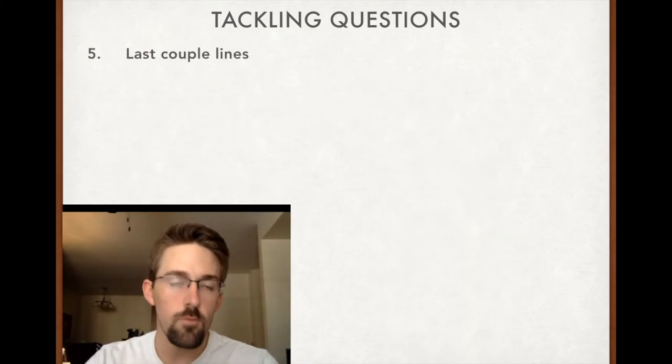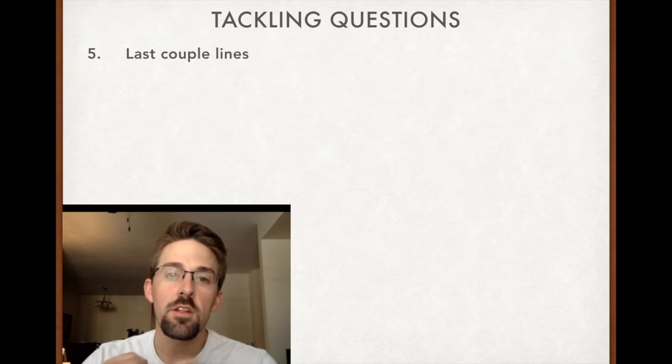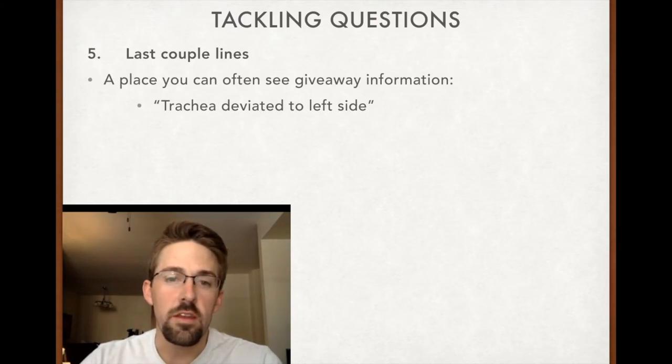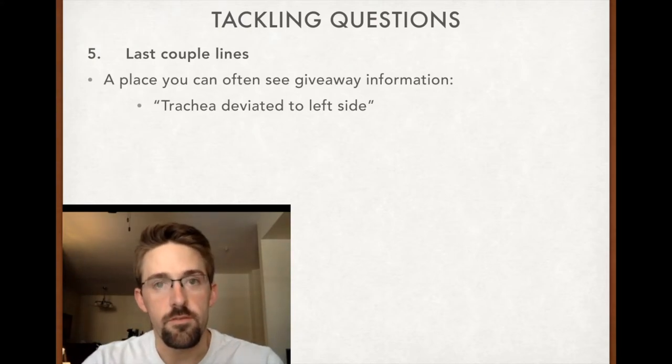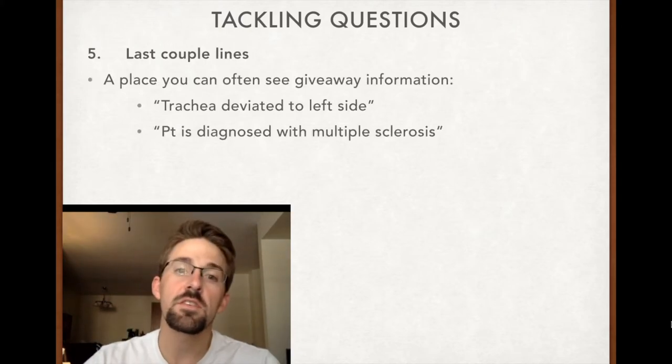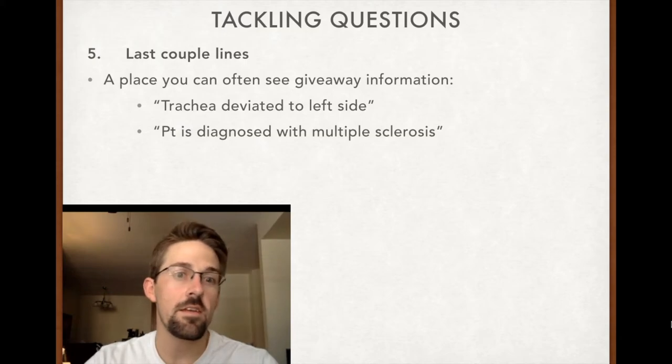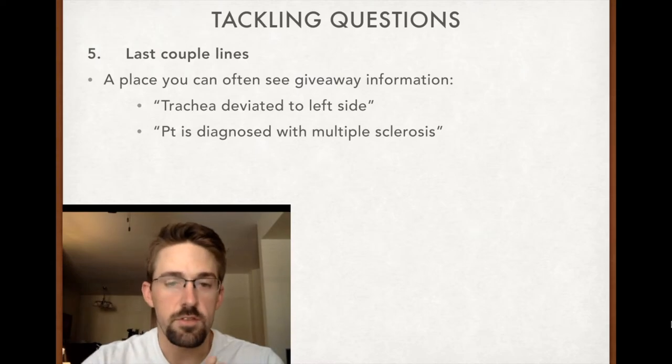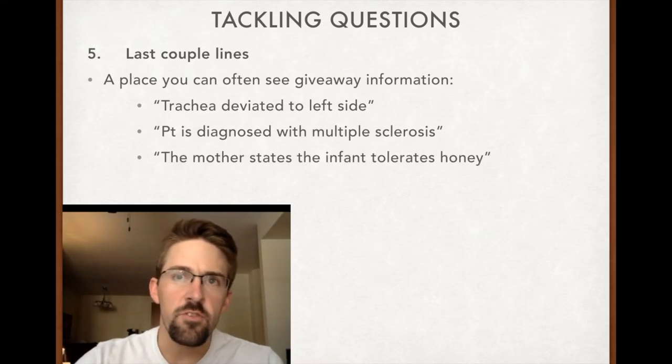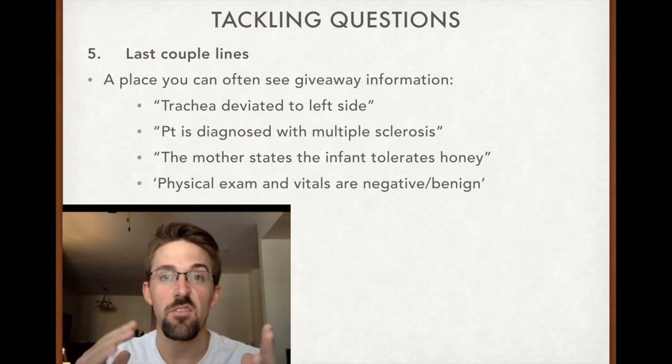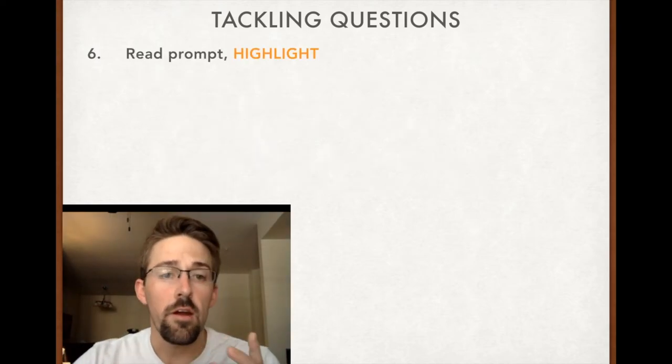Last couple lines. Once in a while, this will give you a really big buzzword or clue as to what's going on. It might be tricky. It deviated to the left side. Well, that's a very few specific amount of things. Patients diagnosed with multiple sclerosis. The stem is going to give me this long, convoluted story about her neurologic symptoms, and at the very end they're going to tell me the diagnosis is MS. What do you want to do about it? It'll save you some time. Or, you know, the mother states the infant tolerates honey. And sometimes it's nothing. Sometimes it says physical exam and vitals are negative and benign, and there's no helpful information.